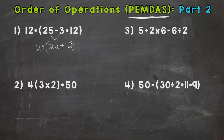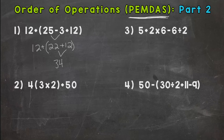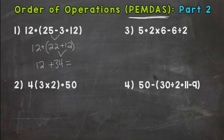Don't forget to drop your 12 and the addition sign. So now we have 12 plus (22 plus 12). Do we have any parentheses? Yes, so we automatically start with that: 22 plus 12 is 34. Now we've used up all of the operations within those parentheses, so they go away. Drop your addition sign and your 12, and now we only have one thing left: 12 plus 34, which gives us 46.